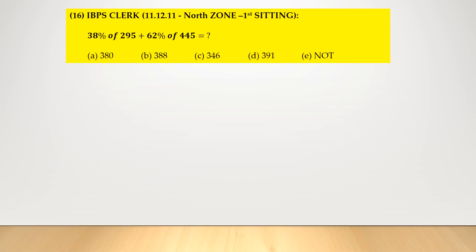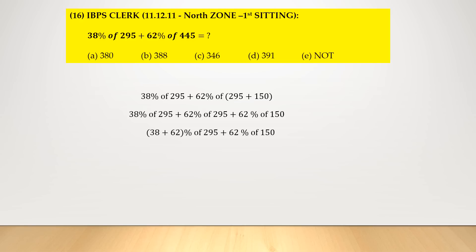Question: 38% of 295 plus 62% of 445. 445 can be broken down into 295 plus 150. So it reduces to 38% of 295 plus 62% of 295 plus 62% of 150. Taking 295 as common: (38 + 62)% of 295 plus 62% of 150 = 100% of 295 plus (60 + 2)% of 150. 295 plus 90 plus 3 = 388. Option number B.